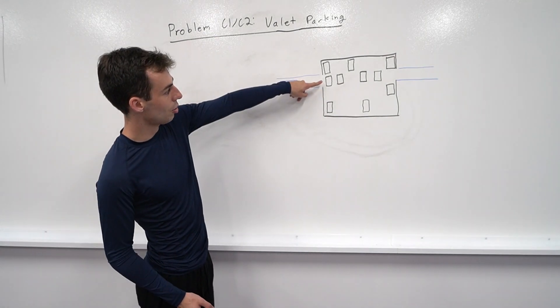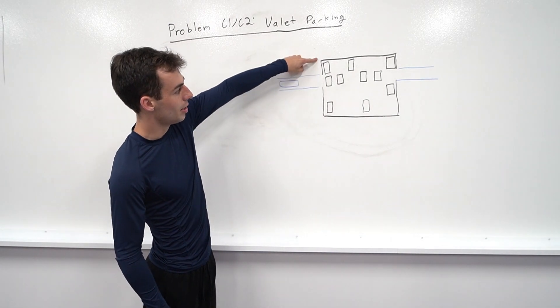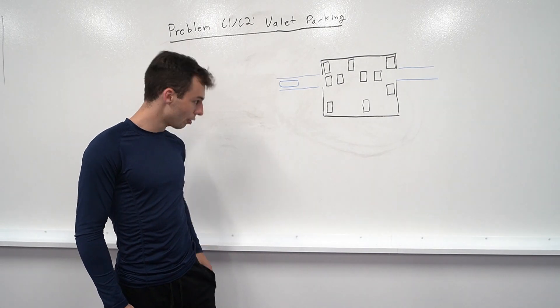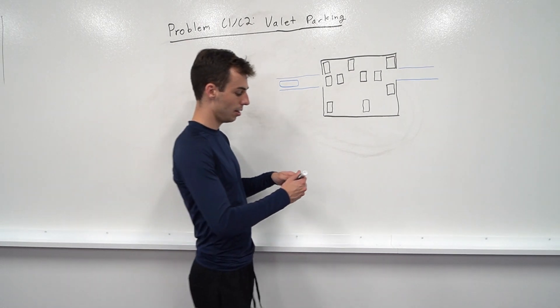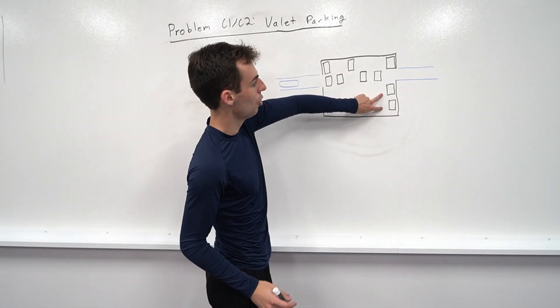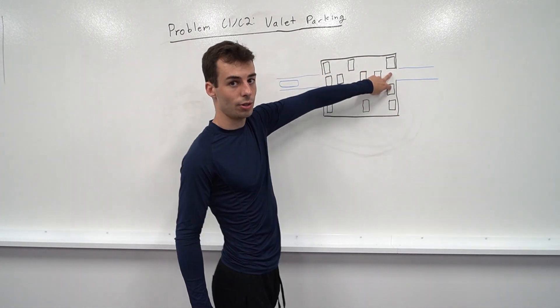So for instance, this car right here, if we tried to move it up, it's blocked. But this car here, it can move up. And then if we had two cars next to each other, maybe we had two cars like this, right? These two cars, you can move both of them up, and they'd be here and here.